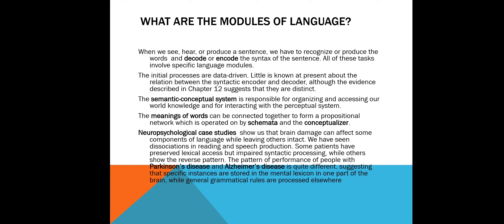Neuropsychological case studies show us that brain damage can affect some components of language while leaving others intact. We have seen dissociations in reading and speech production. Some patients have preserved lexical access but impaired syntactic processing, while others show the reverse pattern. The pattern of performance of people with Parkinson's disease and Alzheimer's disease is quite different, suggesting that specific instances are stored in the mental lexicon in one part of the brain, while general grammatical rules are processed elsewhere.